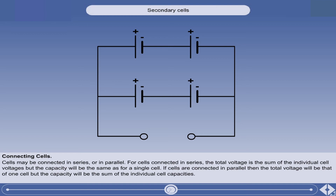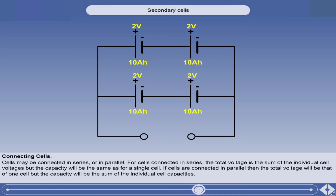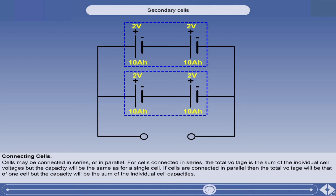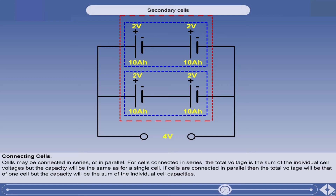The cells can also be connected in a combination of both series and parallel, allowing both the voltage and the ampere hour capacity to be increased. As an example of this, if we take four 2 volt cells, each with a 10 ampere hour capacity, and connect them as shown, you can see that we have two pairs of cells in series, with the pairs being joined together in parallel. We add the series voltages together to get the output voltage — in this case, 4 volts. And we add together the parallel capacities to ascertain the total capacity — in this case, 20 ampere hours.